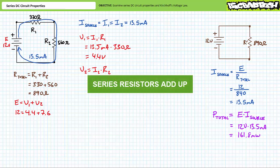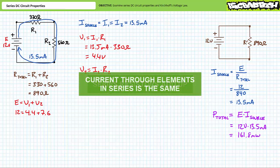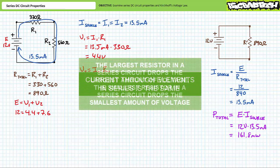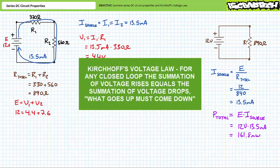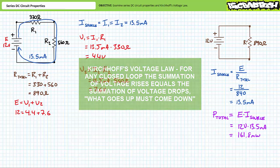Let's add this to our list. One: series resistors add up. Two: current through elements in series is the same. Three: the largest resistor in a series circuit drops the largest amount of voltage, and the smallest resistor drops the smallest amount of voltage. And four: for any closed loop, the summation of voltage rises equals the summation of voltage drops. In summary, what goes up must come down.